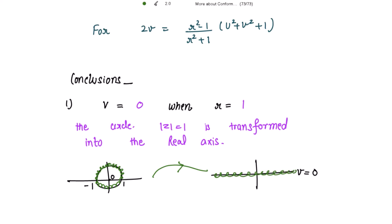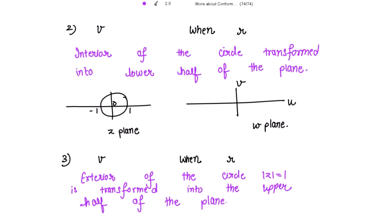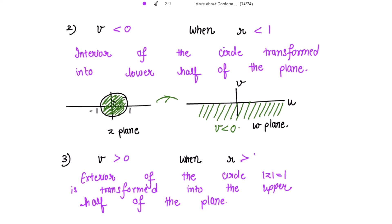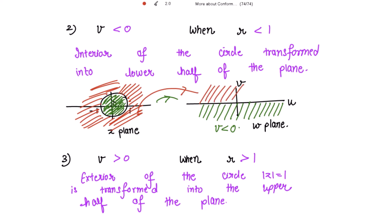Conclusion 2: when v is negative, r is strictly less than 1, meaning the interior of the circle |z| = 1 is transformed into the lower half of the w-plane where v < 0. Conclusion 3: when v is positive, r is strictly greater than 1, so the exterior of the circle is transformed into the upper half of the w-plane.